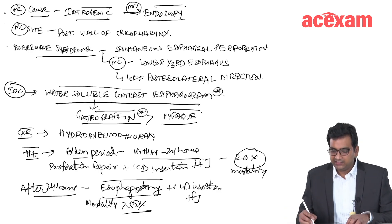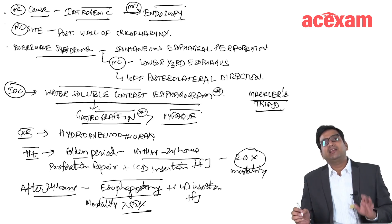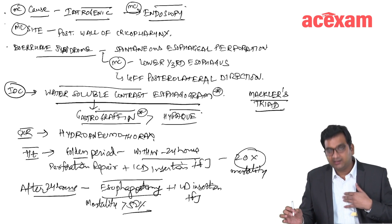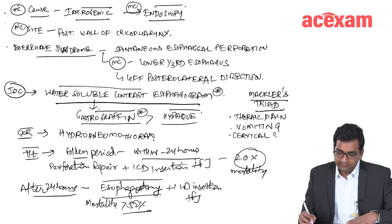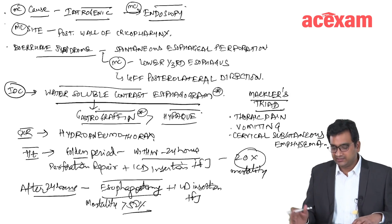There is a triad which is seen, Mackler triad, in patients of esophageal perforation. This Mackler triad is presence of thoracic pain, vomiting and subcutaneous emphysema. This is presence of thoracic pain, presence of vomiting and cervical subcutaneous emphysema. These are the components of Mackler triad.